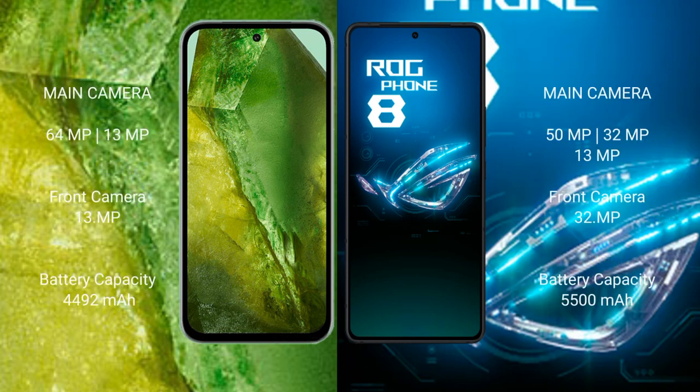The Google Pixel 8a features a dual rear camera setup with a 64-megapixel plus 13-megapixel configuration, and a 13-megapixel front camera. The ASUS ROG Phone 8 features a triple rear camera setup with a 50-megapixel plus 13-megapixel plus 5-megapixel configuration, and a 32-megapixel front camera.